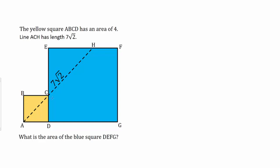We have this smaller yellow square ABCD and we're told that it has an area of 4. We have this line ACH and that has length 7 root 2, and that's all the information we're given. With that we have to find the area of the blue square DEFG.